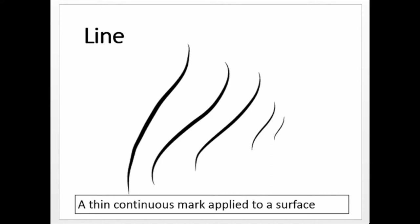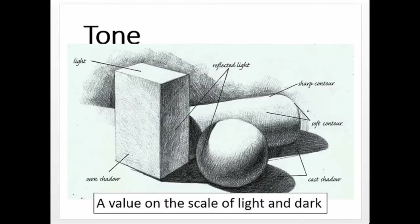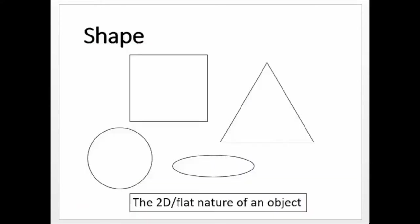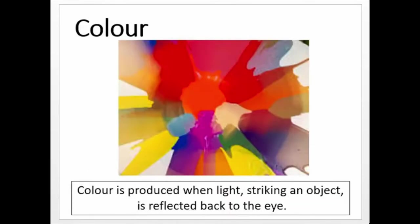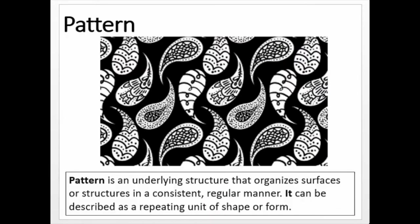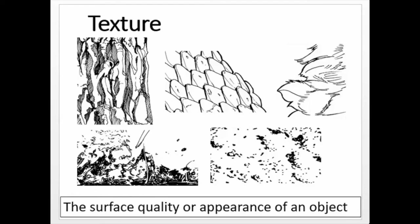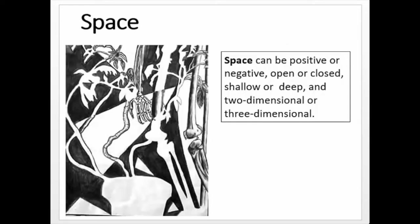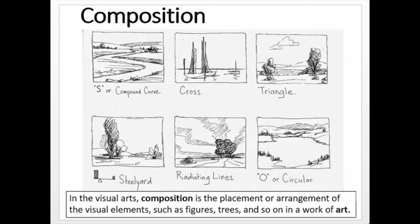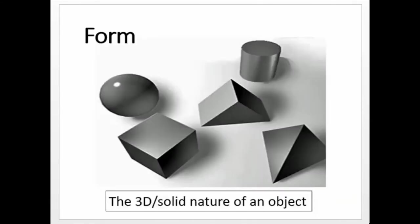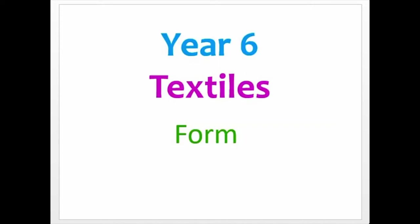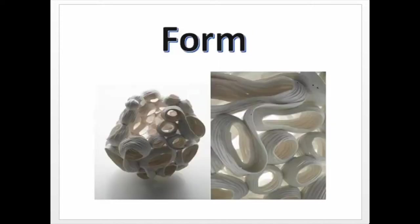We've got line, tone, shape, and colour — these are all the visual elements. We've also got pattern, texture, space, composition, and form. Form is the one I want us to concentrate on because it's linked to the task we're going to do today, and we're looking at it with a textiles focus.